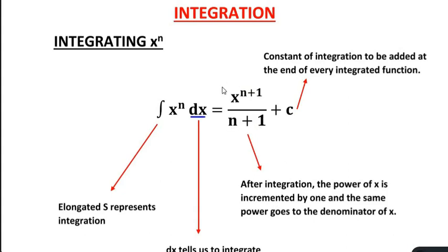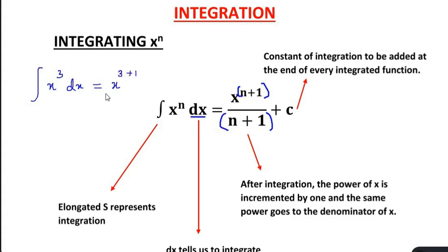After integration, the power of x has increased by 1, and the same power is repeated in the denominator. For example, integration of x cubed dx is written as x to the power of 3 plus 1 over 3 plus 1, which equals x to the power of 4 over 4. Then we add the constant of integration C at the end of every integrated function.